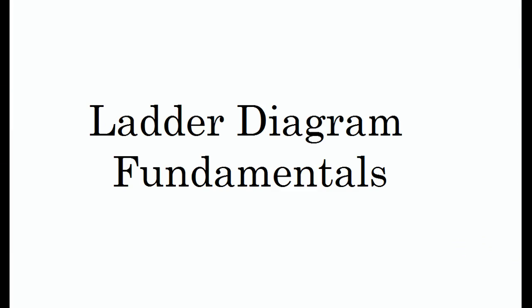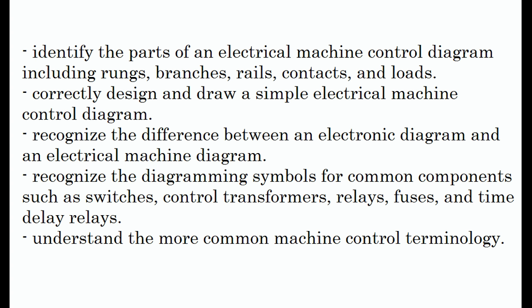Ladder diagram fundamentals. Upon completion of this video, you will be able to identify the parts of an electrical machine control diagram including rungs, branches, rails, contacts, and loads; correctly design and draw a simple electrical machine control diagram; recognize the difference between an electronic diagram and an electrical machine diagram; recognize the diagramming symbols for common components such as